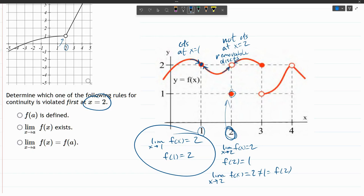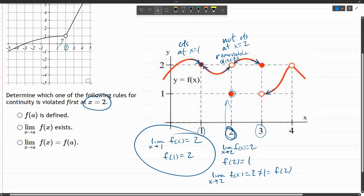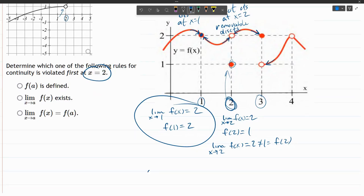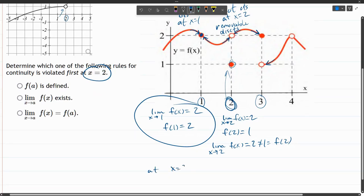All right, the next x value we'll look at is three. Now we got serious problems at three, because when we approach three on either side, you get different values. So that means the one-sided limits do not agree.